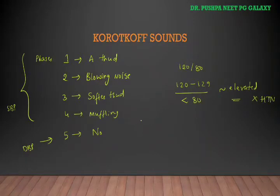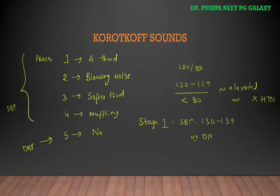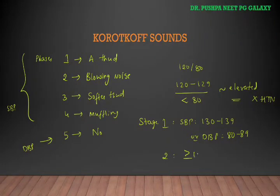There are two stages of hypertension. Stage 1 is systolic blood pressure 130 to 139 or diastolic blood pressure 80 to 89 mmHg. Stage 2 is systolic blood pressure more than or equal to 140 mmHg or diastolic blood pressure more than or equal to 90 mmHg.